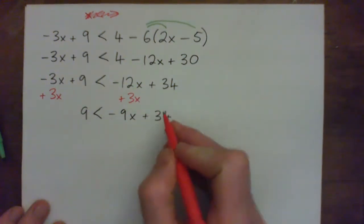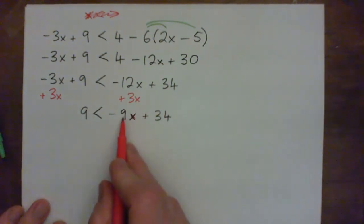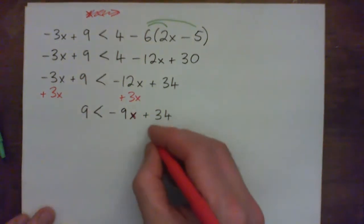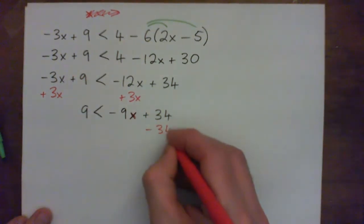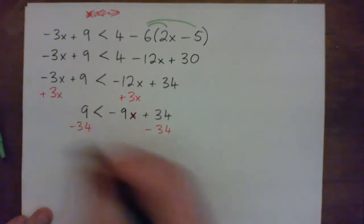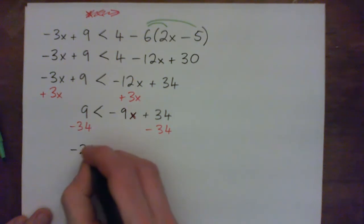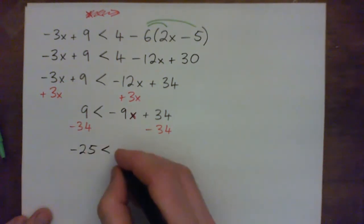So now I'm trying to get x on its own. x is being multiplied by negative 9 and 34 is being added. So the smart thing to do is let's subtract 34 from both sides so we can get the x term on its own. 9 minus 34 is 9 good guys, 34 bad guys makes 25 bad guys. Negative 25. And we get negative 9x here.